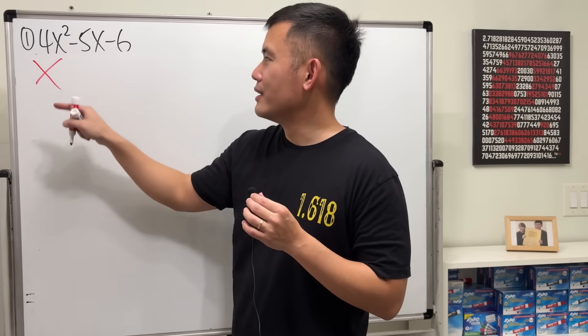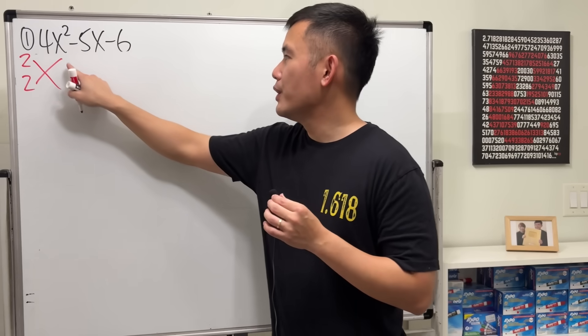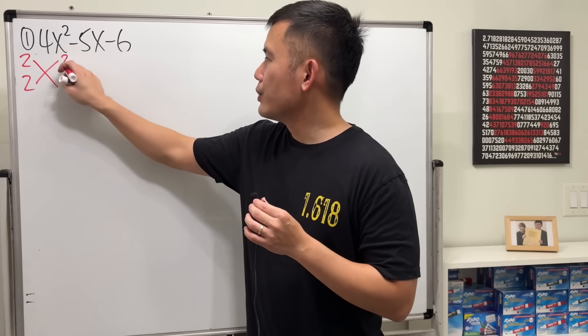what times what will give us 4? Well, we can try 2 and 2, and then what times what will give us negative 6? Well, we can try 2 and negative 3.